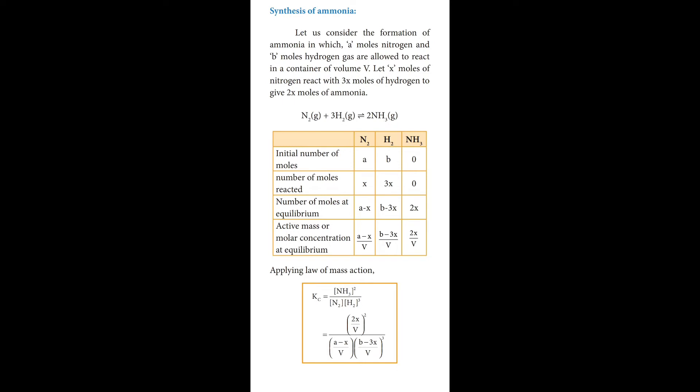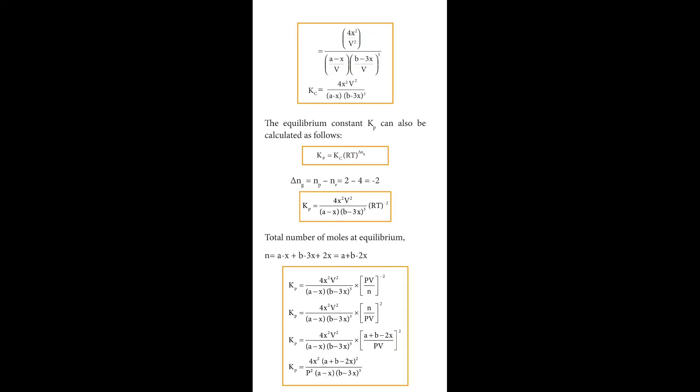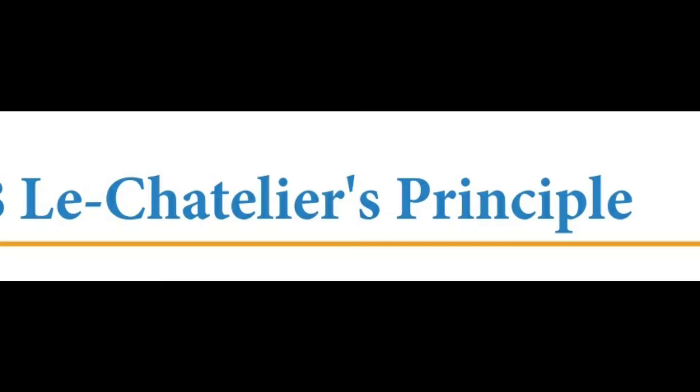Next is synthesis of ammonia. This is a bookback question. So we can see the Kp and Kc value. Kp is derived as 4x² into (a+b-2x)² by p² into (a-x) into (b-3x)³.